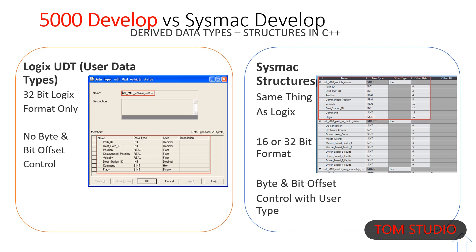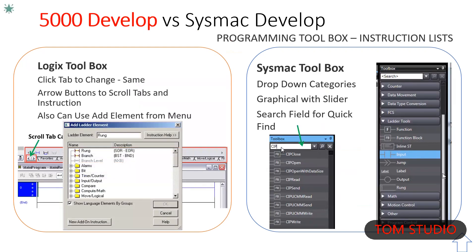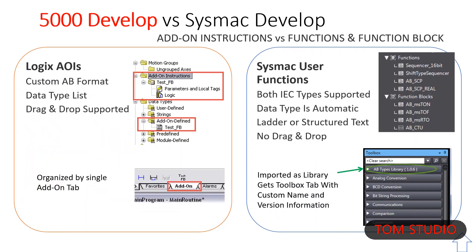Both platforms have F1 instruction help. Logix is not drag and drop. Omron has better descriptions for names, and PLC open compliance is a big plus. The Logix toolbar is kind of hard to navigate, however the add ladder element interface is nicer. AB does not do user functions, only function blocks — not sure why they call them instructions.